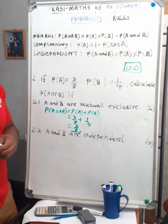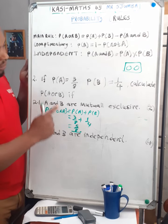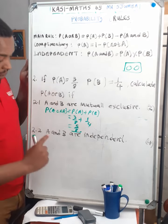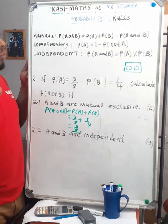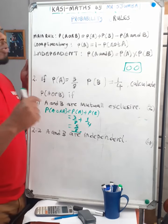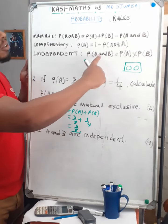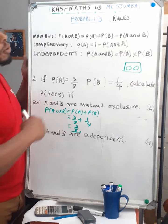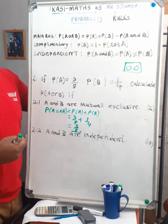Now for question 2.2, we should calculate P(A or B) if A and B are independent. When events are independent, we use the formula: probability of A and B is equal to the product of the probability of A and the probability of B.